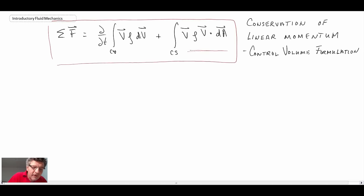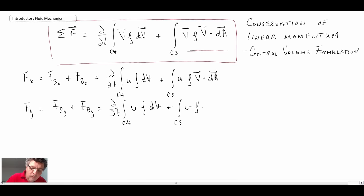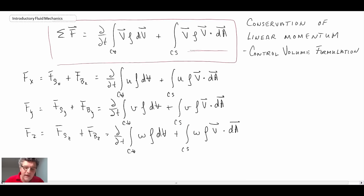I'll write out each of the different vector components. So that is the conservation of linear momentum expressed out as three different vector components, x, y, and z directions.